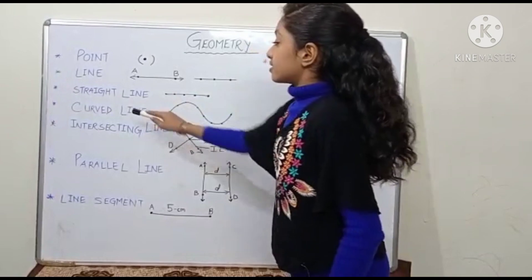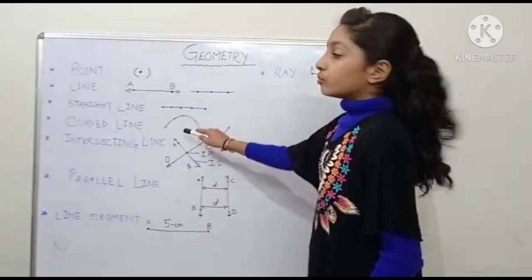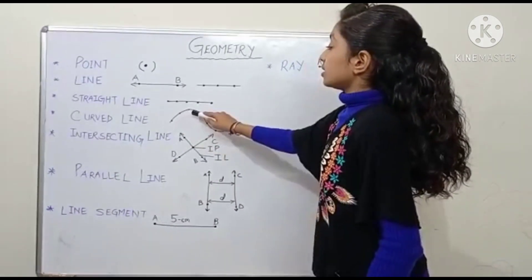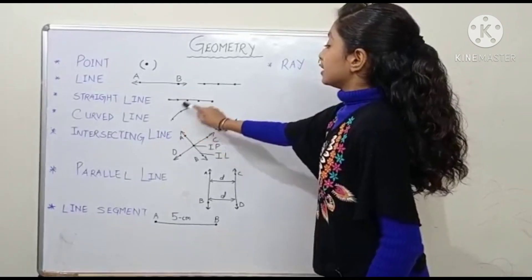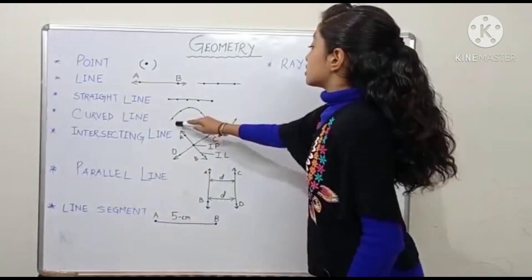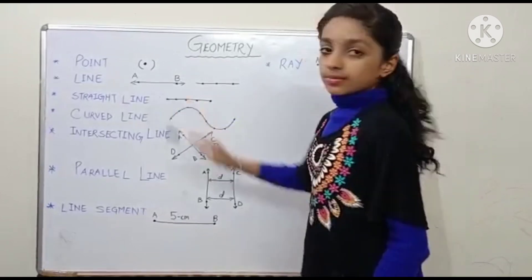Now, curved line. So friends, curved line is a line which is formed by joining the points together but in different directions. This line is a curved line.